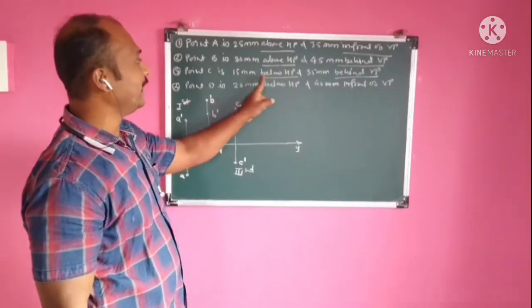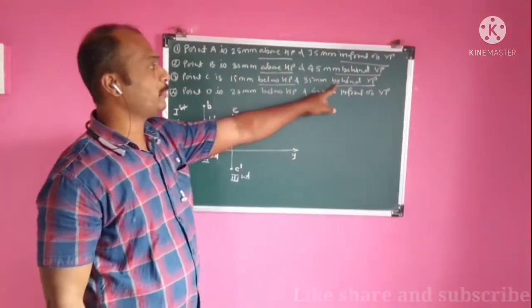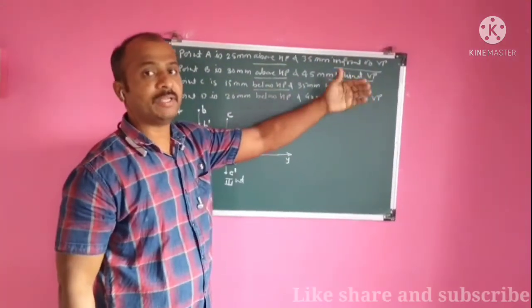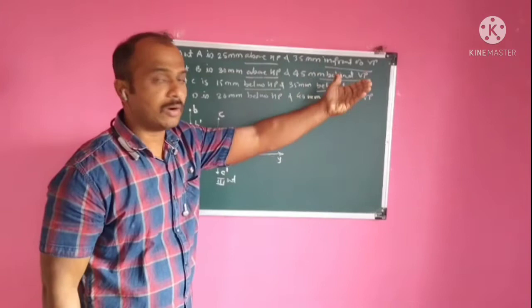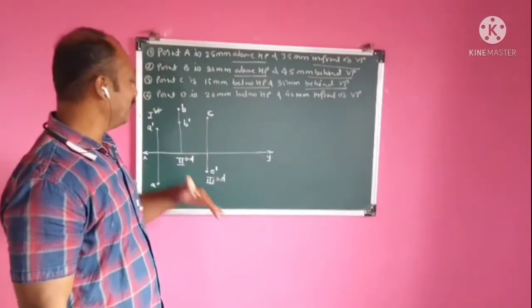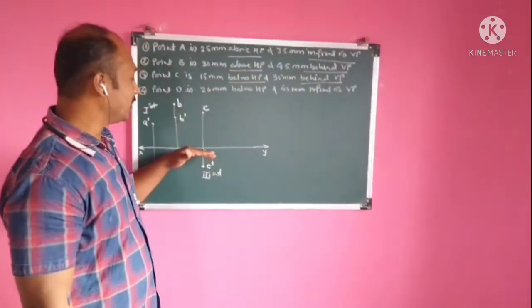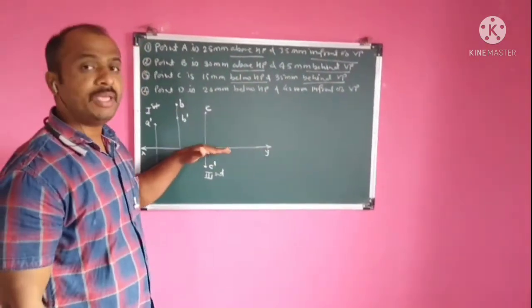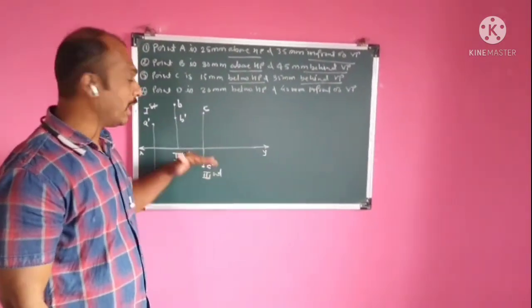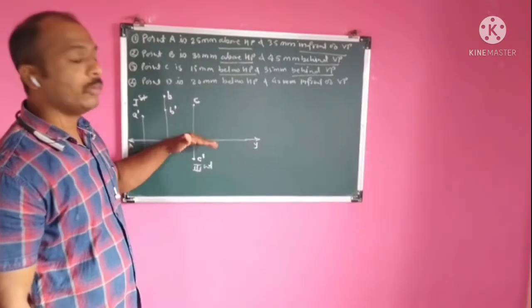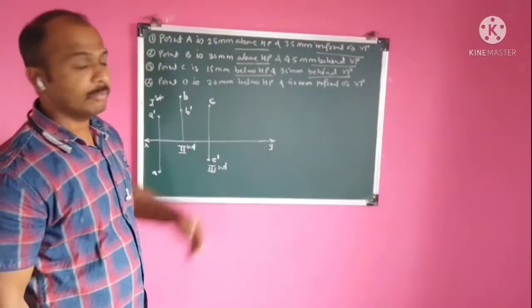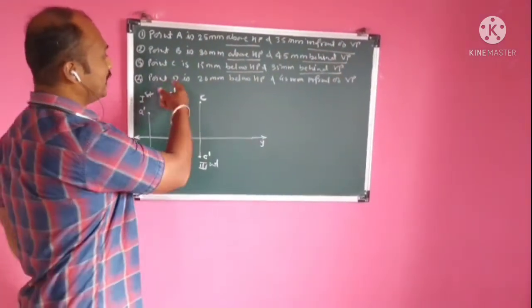So point C is below HP and behind VP, which means it lies in the third quadrant. When a point is in the third quadrant, its front view will be below the XY line and its top view will be above the XY line.